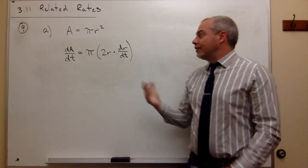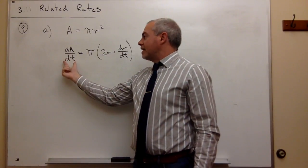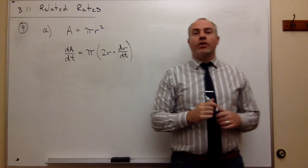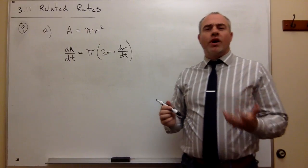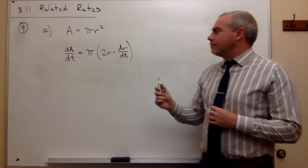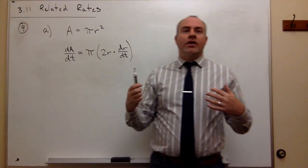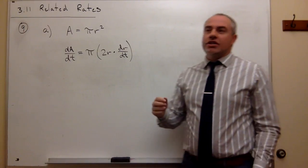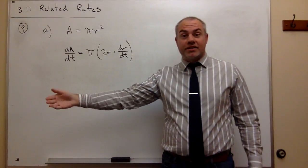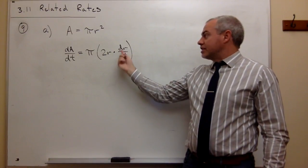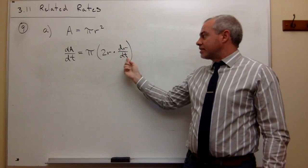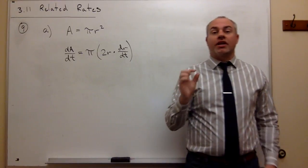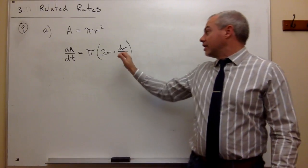Now I have three unknowns: dA/dt, r, and dr/dt. What I'm trying to find is how the radius is changing, which is the change in the radius with respect to time — dr/dt. So dr/dt is what I'm looking for.